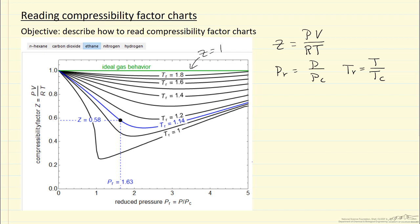for example if reduced temperature is 1.14 and reduced pressure 1.63, we can read off this chart that the compressibility factor is 0.58.